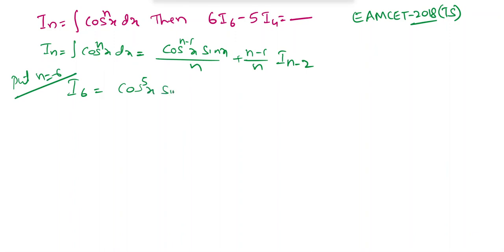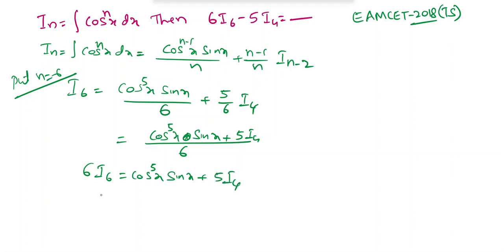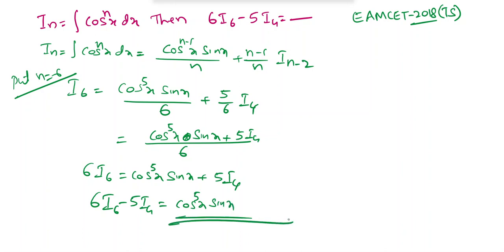Multiplying both sides by 6: 6I₆ = cos⁵x · sinx plus 5I₄. Rearranging: 6I₆ minus 5I₄ = cos⁵x · sinx. This is the required answer.